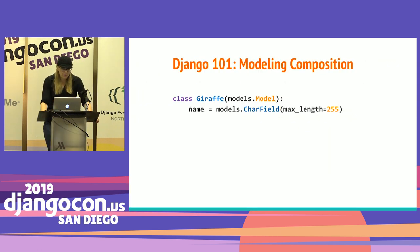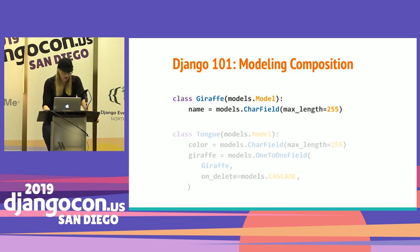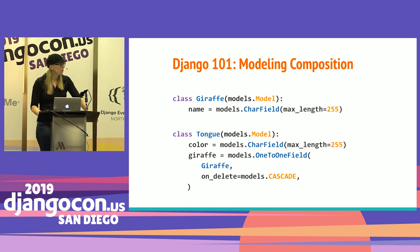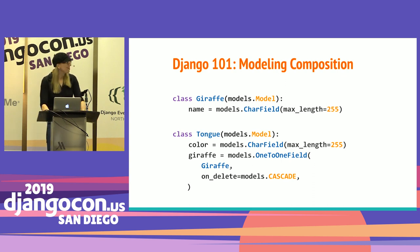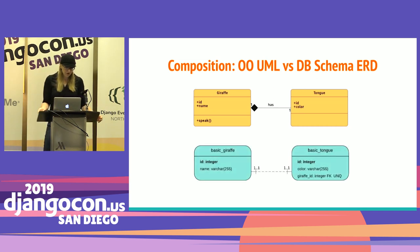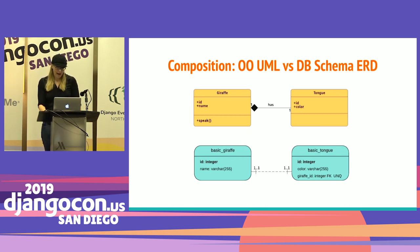Let's look at composition in Django. We have a giraffe class with a name field. We have a tongue class and it has a one-to-one field back to giraffe. If giraffes had multiple tongues, I would use a foreign key for the one-to-many relationship. Looking at the object-oriented UML diagram, we represent our objects with a one-to-one relationship, and this looks very similar to the entity relational diagram or ERD that represents our database schema, where objects are represented as tables and foreign keys show the association.